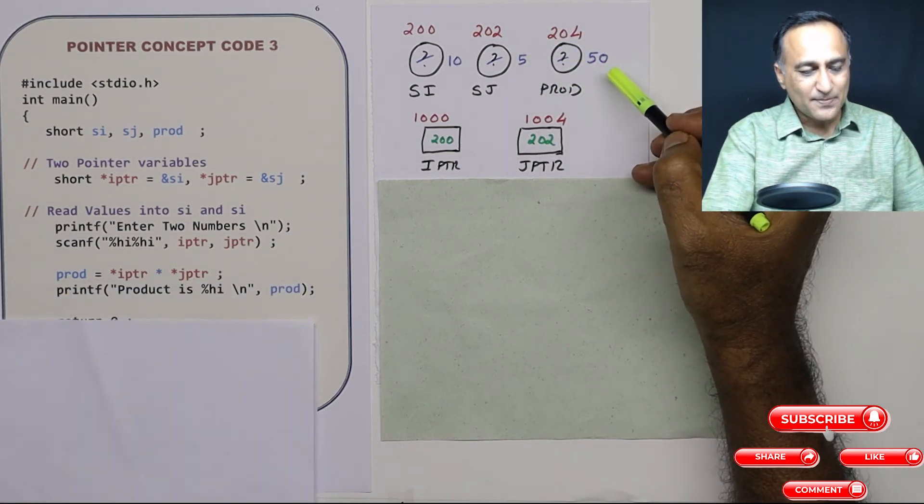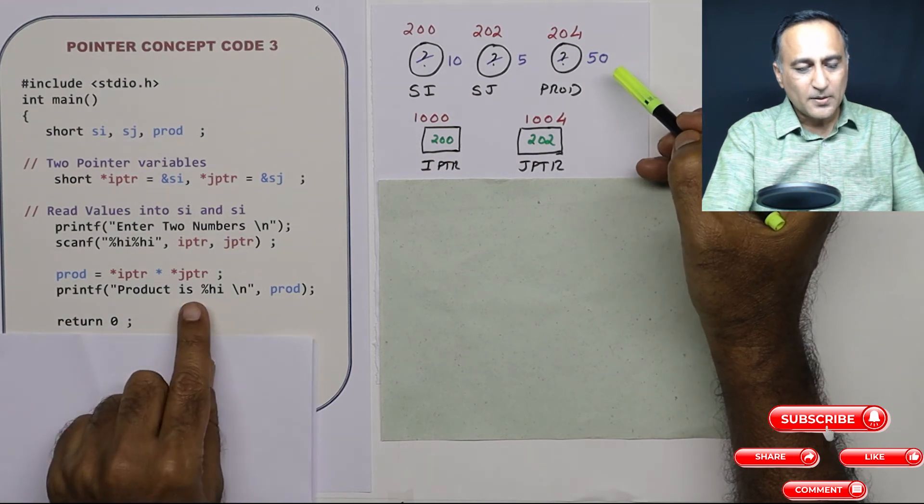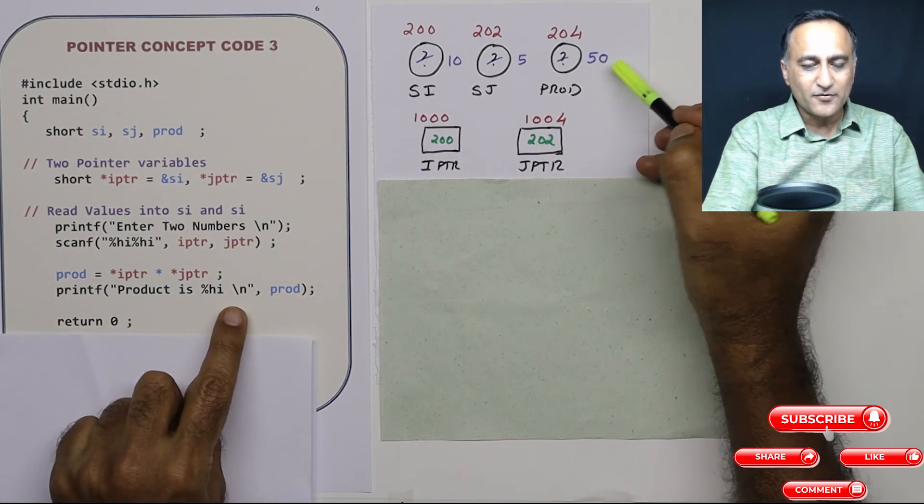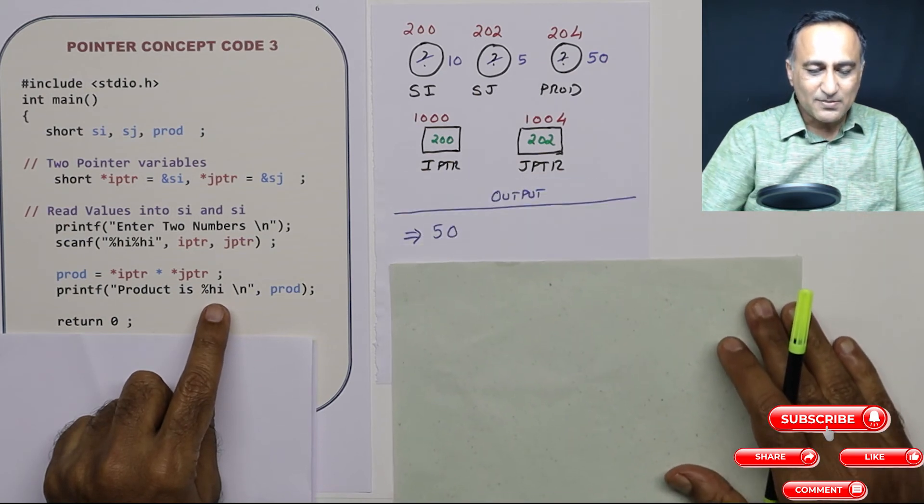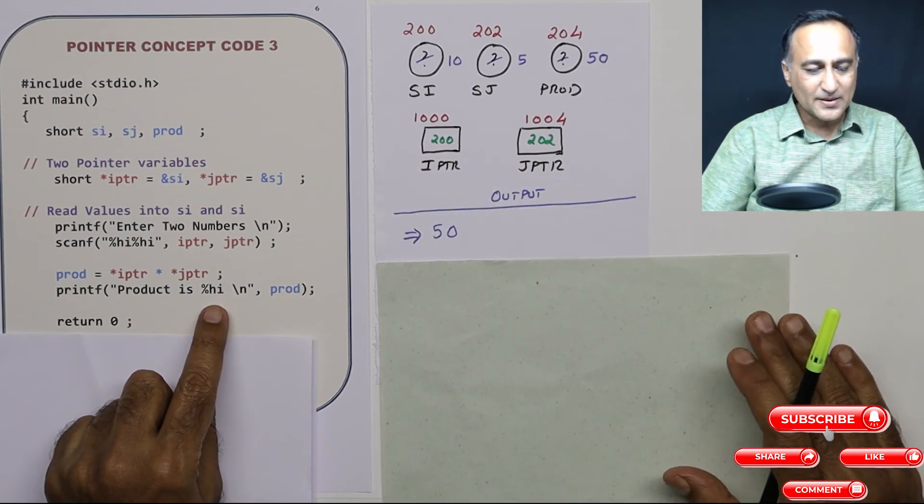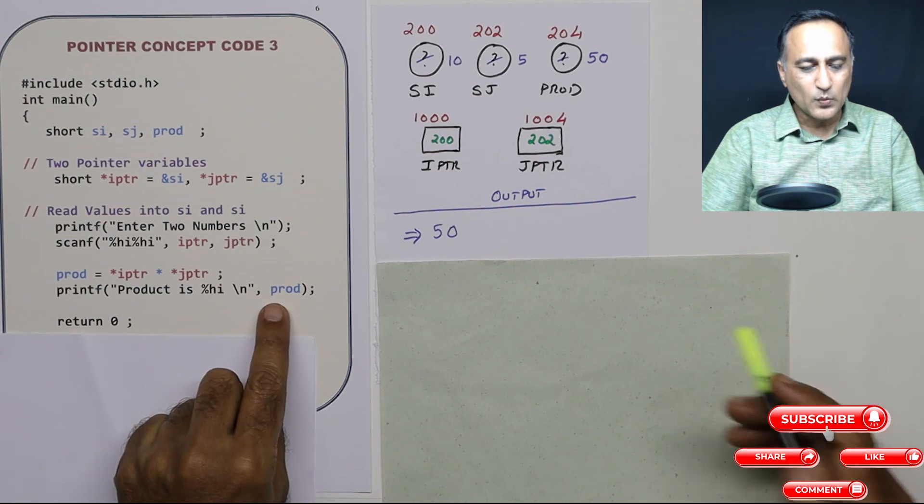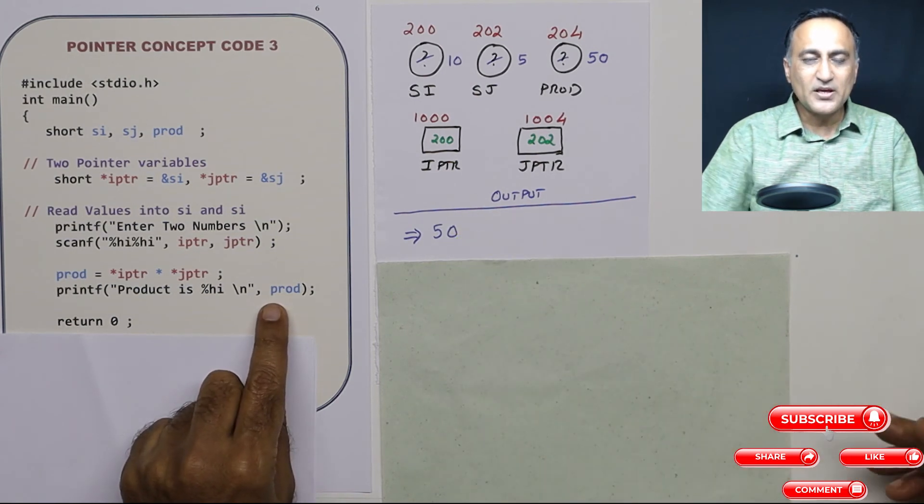And in the last step, I am simply going to print product is percentage HI. It will print 50 on the screen. This can be verified by this particular step. Just we are trying to print one value here, and which happens to be 50.